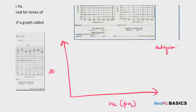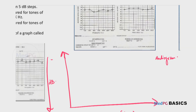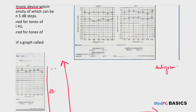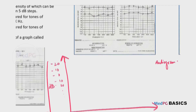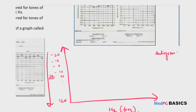What is happening is that the decibel scale is increasing downwards. That is, it starts from negative — for example, negative 20, negative 10, 0, then 10, 20, and so on, going up to 120.